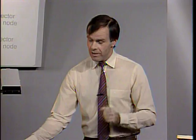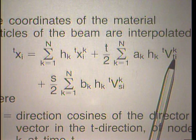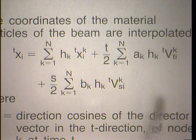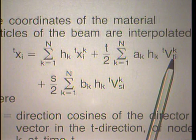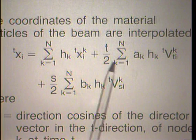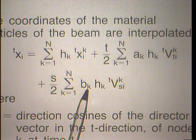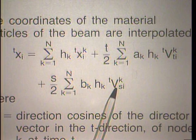We add to this a term that comes in because of the thickness of the beam into the t direction — ak times the t isoparametric coordinate running from minus 1 to plus 1, times hk, times the direction cosines of the director vector in the t direction at time t. A similar term is added for the s direction: s running from minus 1 to plus 1, bk being the thickness into the s direction at node k, and the direction cosines of the director vector into the s direction at time t.